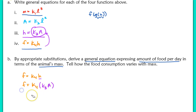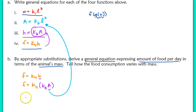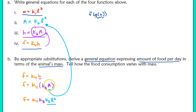Now I can make another substitution. Skin area A equals K₂ times L squared, so replacing A gives F equals K₄ times K₃ times K₂ times L squared. Food consumption is now expressed in terms of the length of the animal.